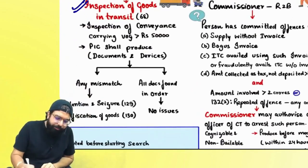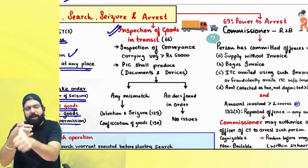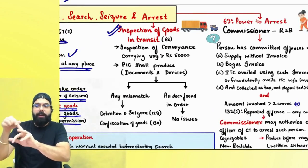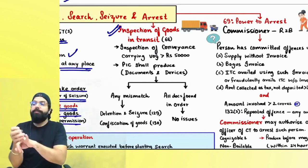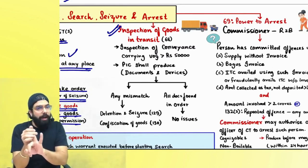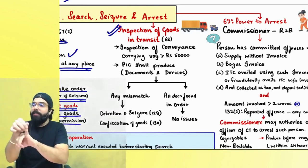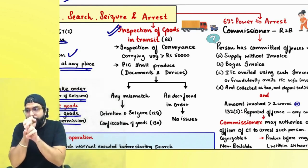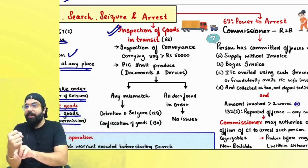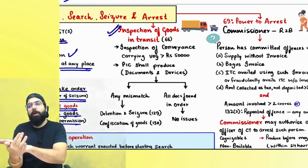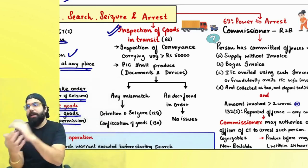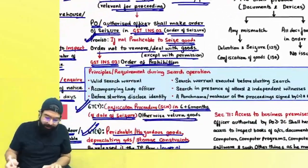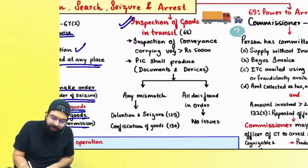Section 67 summary: 67(1) — inspection; 67(2) — search and seizure; 67(3) — documents/books not relied upon should be returned within 30 days; 67(4) — break open if access is denied; 67(5) — photocopies; 67(6) — provisional release; 67(7) — confiscation notice; 67(8) — perishable/hazardous goods, lower of market price or tax interest penalty to be paid for release; 67(9) — inventory to be prepared by the seizing officer.